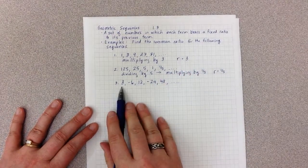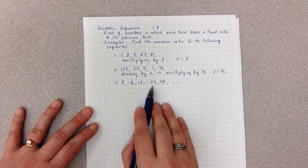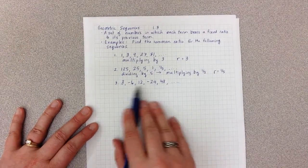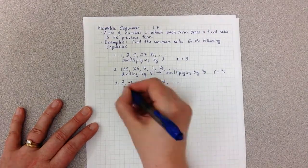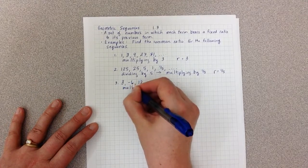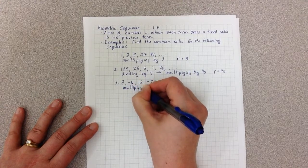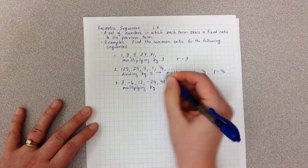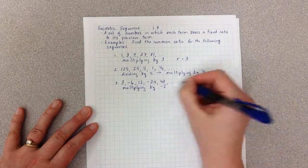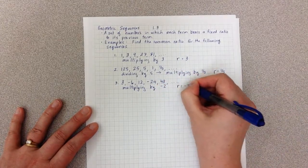In this case our numbers are getting bigger if we ignore the negatives, but we have this negative issue coming in. So in this case I am multiplying by a negative number, by negative 2. So our R equals negative 2.